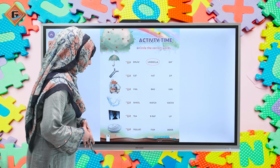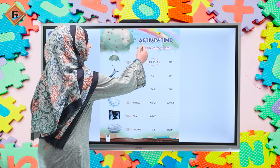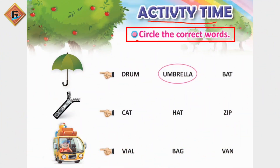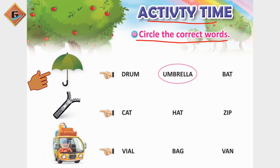Okay students, this is page number 76 and this is activity time. What are we going to do? Circle the correct words — a picture is given and it is written in three words. What do you need to do? The correct name of the picture, you have to circle. Like the first one, you already have to circle umbrella. Drum, umbrella, and bat — but we need to circle umbrella.